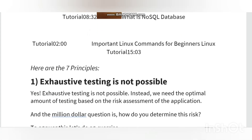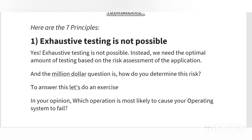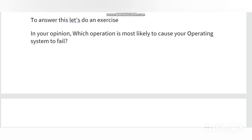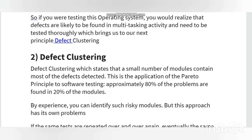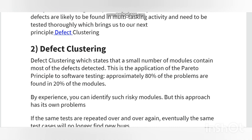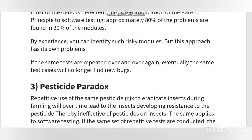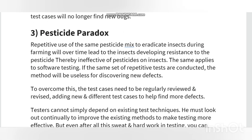Now I'll talk about the seven principles of software testing: testing shows presence of defects, exhaustive testing is not possible, early testing, defect clustering, pesticide paradox, testing is context dependent, and absence of errors fallacy. It's important that you achieve optimum test results while conducting software testing without deviating from the goal. To determine that you are following the right strategy, you need to stick to some basic testing principles — here are the seven principles widely practiced in the software industry.